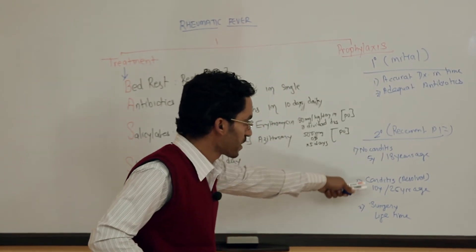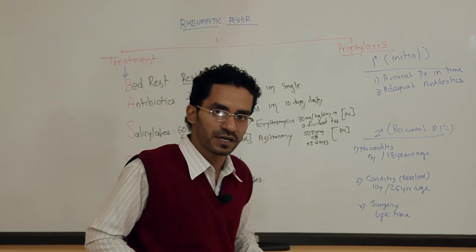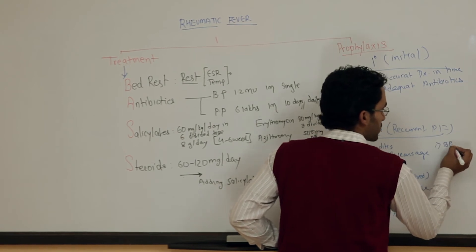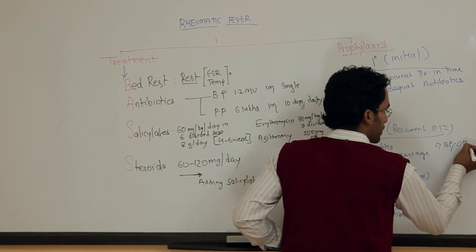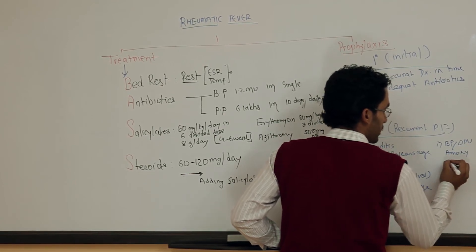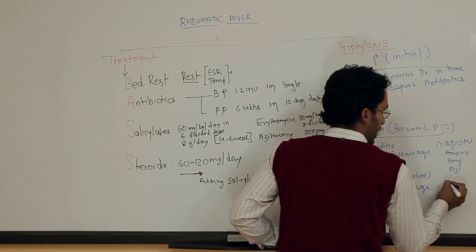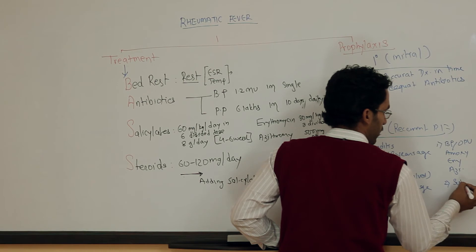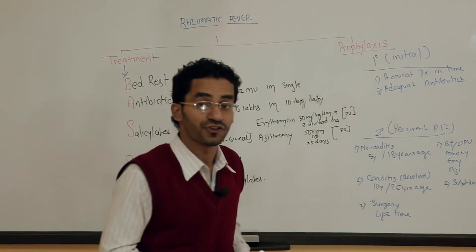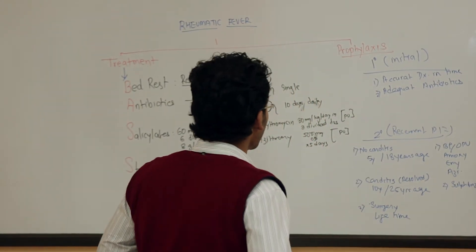The drugs used for prophylaxis in rheumatic fever are: benzathine penicillin or oral penicillin V. We can also use amoxicillin, erythromycin, azithromycin, and sulfadiazine. These are the drugs that can be used for prophylaxis in case of rheumatic fever.